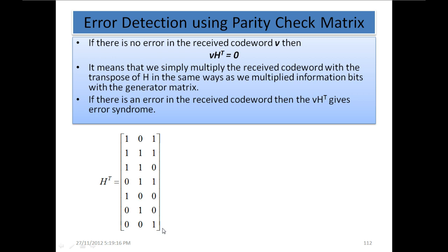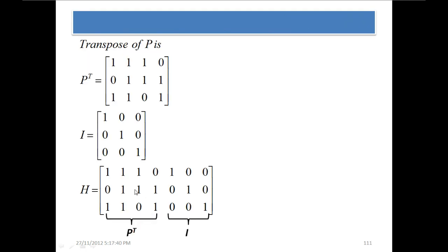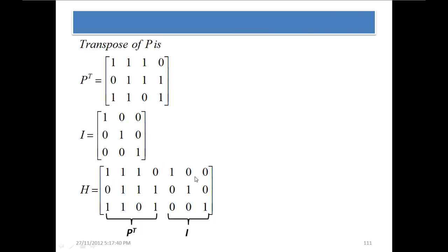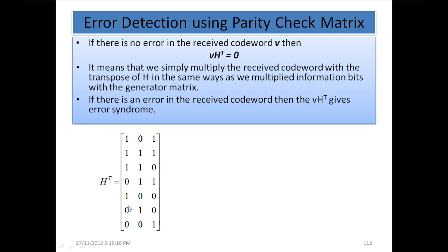To detect errors, we multiply the received codeword with the transpose of the parity check matrix H. So to detect an error, we first find the transpose of H. The transpose of H is obtained by changing rows to columns.